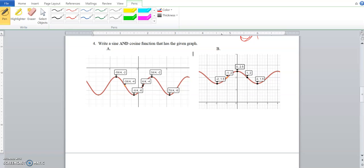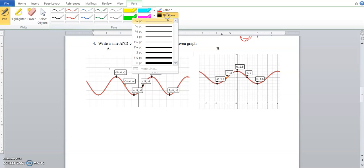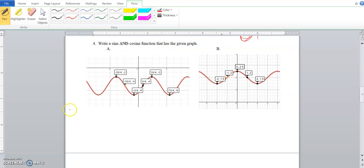The next part is writing a sine and cosine function given the graph. What we're going to do is identify those first four characteristics of the graph: amplitude, period, phase shift, and vertical shift. They're the exact same whether it's sine or cosine.